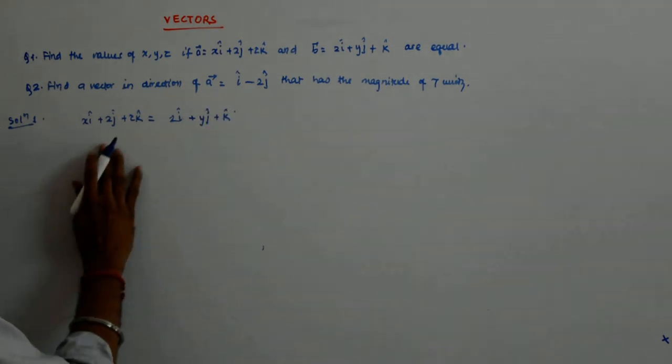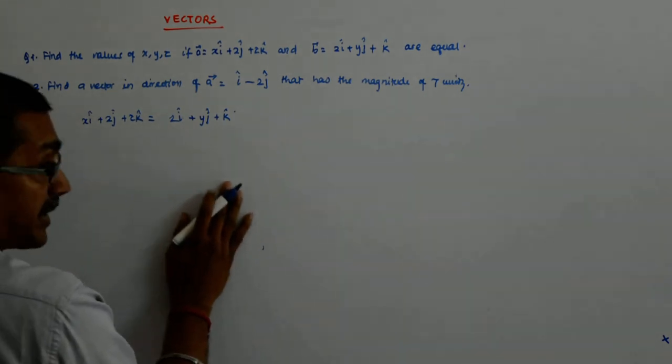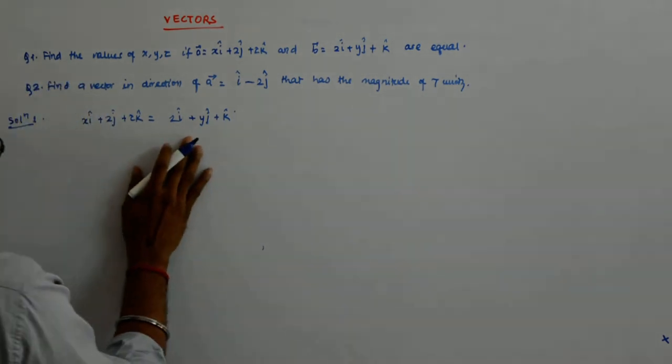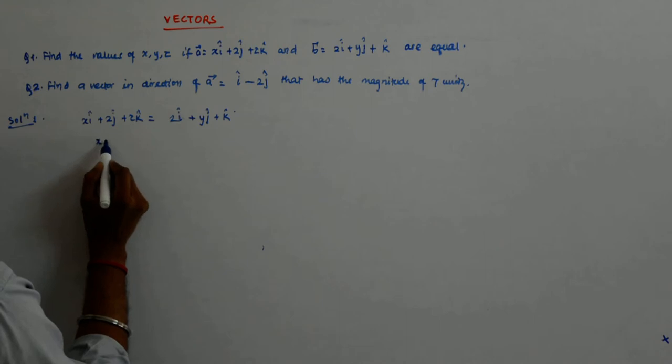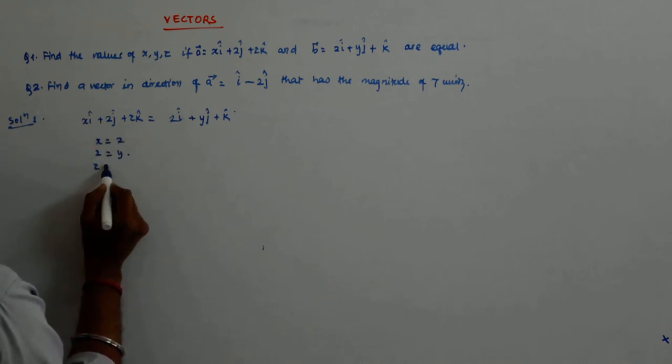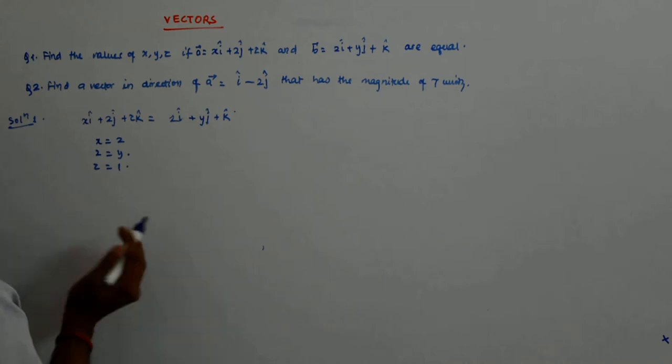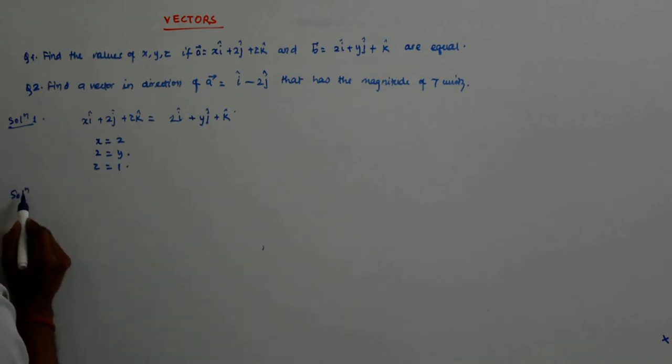And the vectors are equal only when their respective coefficients are equal. So coefficients of IJK are equal. So X is equal to 2 and 2 is equal to Y and Z is equal to 1. Pretty simple, right? Still.